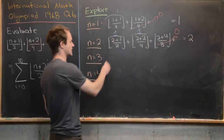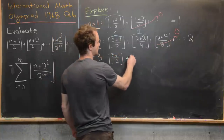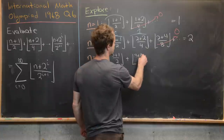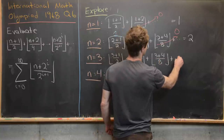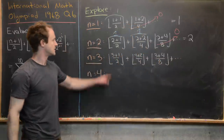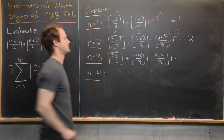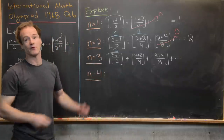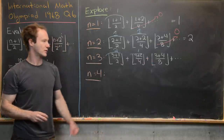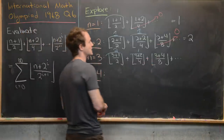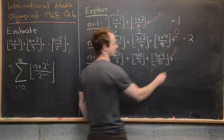For n = 3, we have the floor of 4/2 plus the floor of 5/4 plus the floor of 7/8 plus dot dot dot. The floor of 4/2 is 2, the floor of 5/4 is 1, and the floor of 7/8 is 0. So in the end we have 2 + 1, which equals 3.